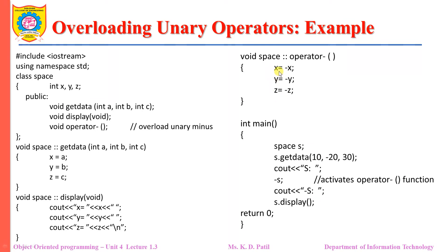The value of x is 10, so it will become minus 10. The value of y is minus 20, so after executing the operator function it will become 20. The value of z is 30 and after executing the operator function it will become minus 30. If you want to display the values of x, y, and z after overloading, you can do so using the display function.